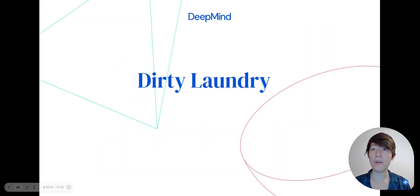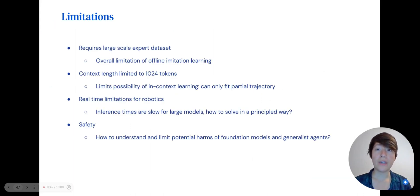In the spirit of transparency, we'll go over some of the limitations of Gato. Gato requires a large-scale imitation dataset, but this is a known limitation of offline imitation learning, and improvements from offline RL could potentially be applied here. Gato's context length is limited to 1024 tokens, which limits the possibility of in-context learning. This is why we used fine-tuning with gradient descent instead of prompting. Especially for tasks with large image observations, we can only fit a partial trajectory as a prompt. The context length is even more limited when we have to run in real-time for the robotics tasks. We'll need to solve fast inference for large models in a more principled way if we want to scale to even larger model sizes. And finally, we're concerned about the safety of these models when it comes to foundation models and generalizations, like Gato. And we hope that techniques like interpretability, visualization, and others will help us understand their potential harms.